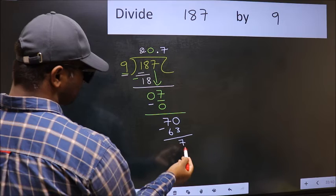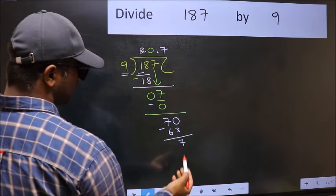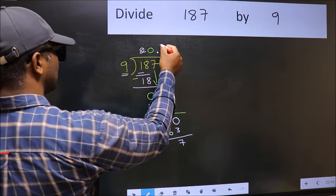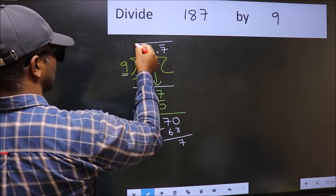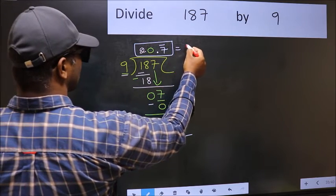We get 7. We got 7 again. That means we get bar on this number. So, this is our quotient.